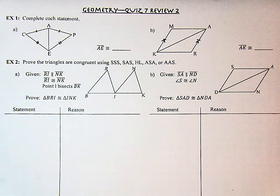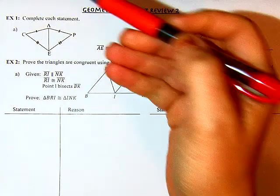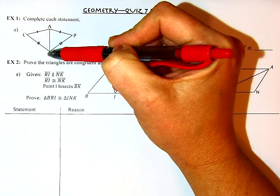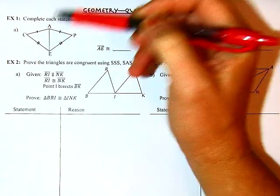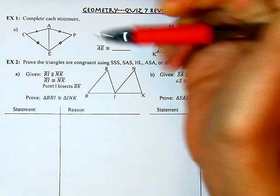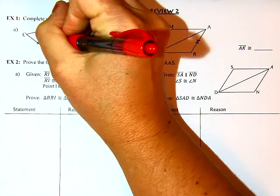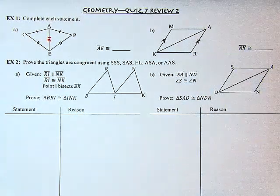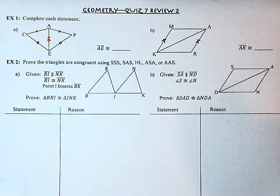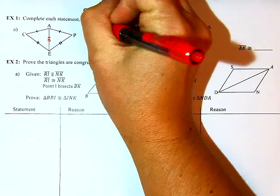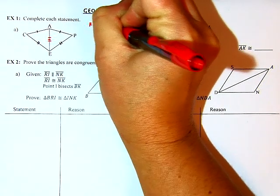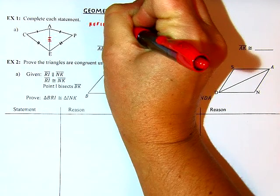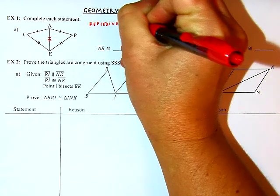In this first problem, we see that common side right here — this segment. It's the same side for both triangles, so I can give it a triple tick mark. If I was writing this as a formal proof, my reason would be the reflexive property of congruence.